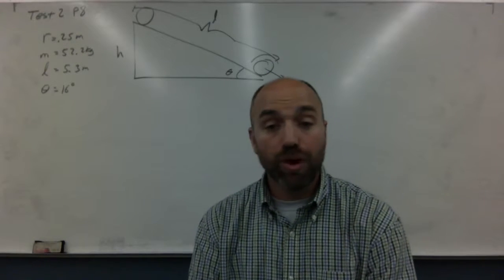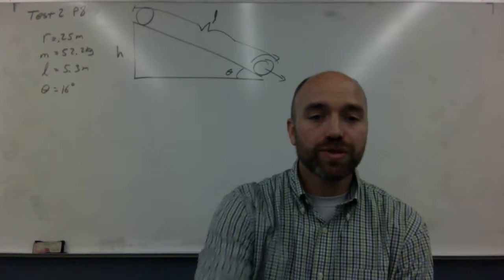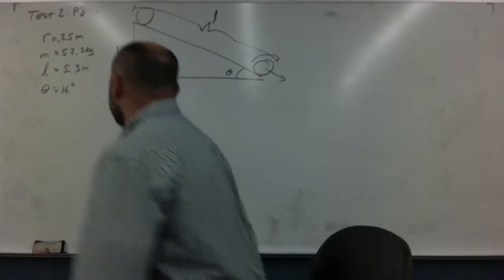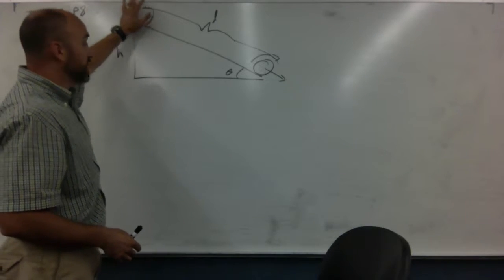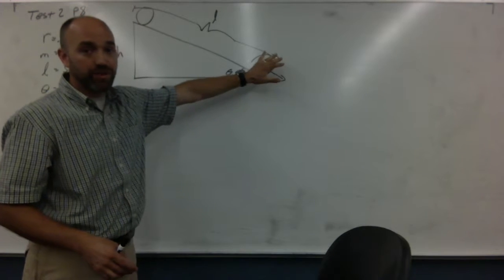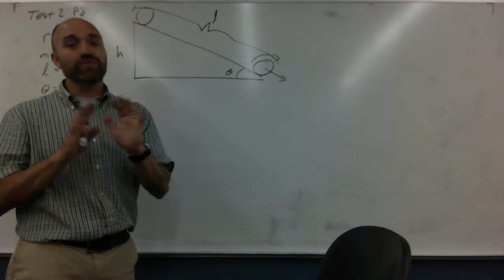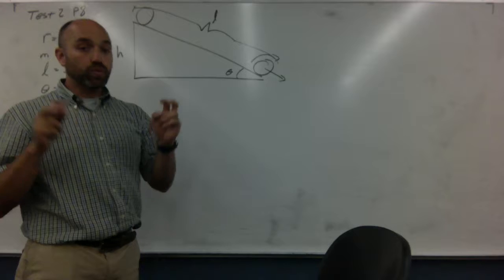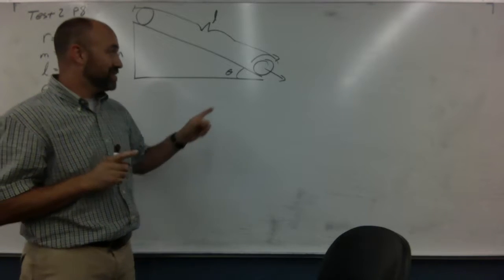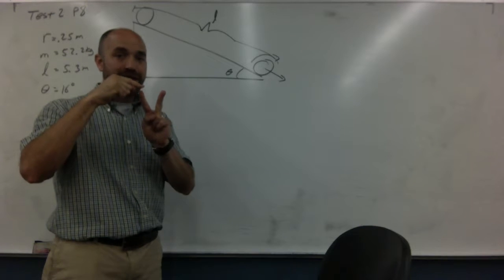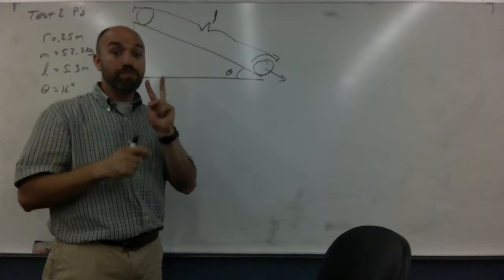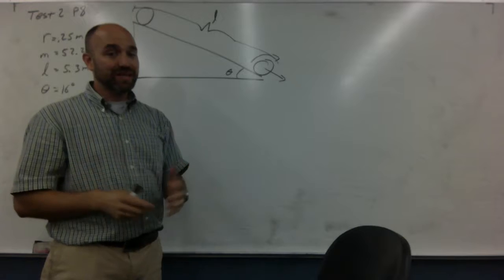Last problem. Problem eight. For this one, you have a disc at the top of an inclined plane and it's got to roll down the inclined plane. Notice something very important. Rolling means when it gets to the bottom, two things are happening. It's moving and it's spinning. Both. So you've got to take that into account.